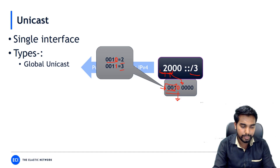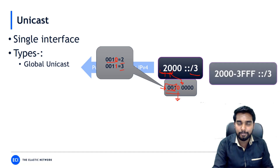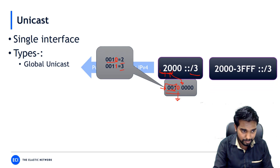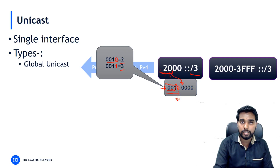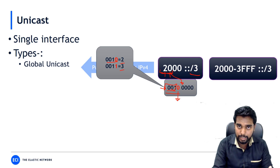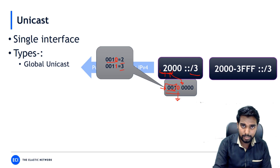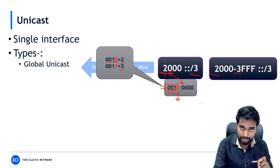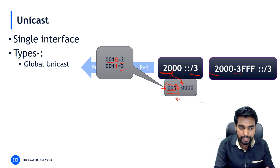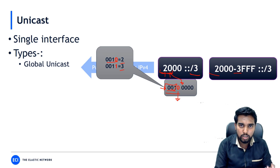This gives me the range of global unicast addresses: from 2000 to 3FFF:FFFF... The thumb rule is: if you see any IPv6 address starting with 2 or starting with 3, it belongs to the global unicast address range. That's how I derived this range.